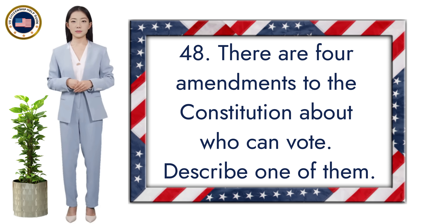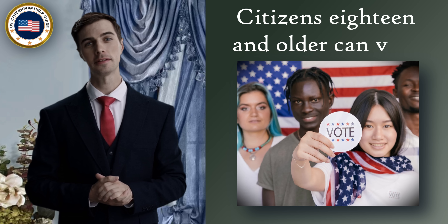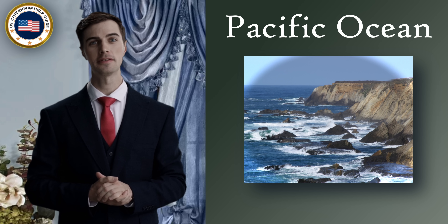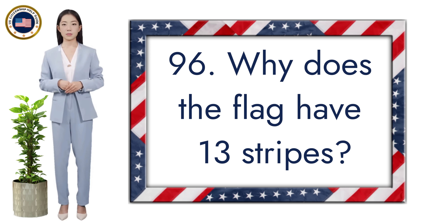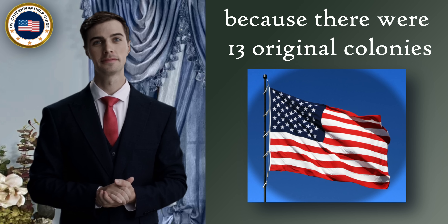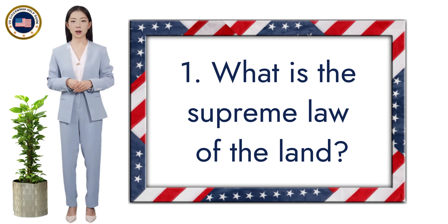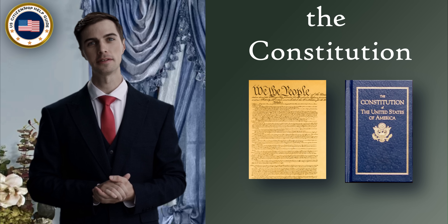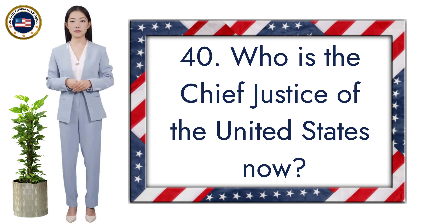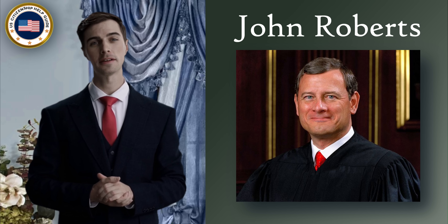What major event happened on September 11, 2001, in the United States? Terrorists attacked the United States. There are four amendments to the Constitution about who can vote. Describe one of them. Citizens 18 and older can vote. What ocean is on the west coast of the United States? Pacific Ocean. Why does the flag have thirteen stripes? Because there were thirteen original colonies.